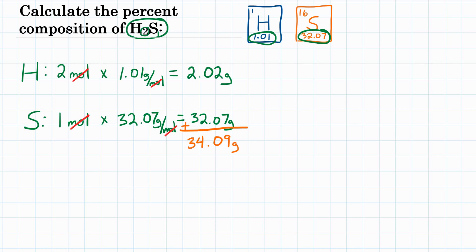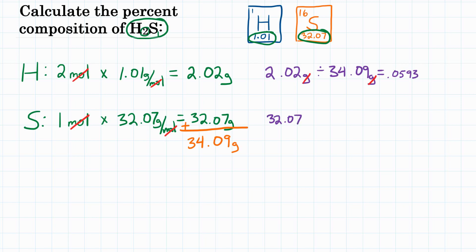Lastly, we want to take each of our masses and divide by that molar mass. For hydrogen, 2.02 grams divided by 34.09 grams gives us 0.0593 — grams cancel out, so no units. And for sulfur, 32.07 grams divided by 34.09 grams gives us 0.9407. Grams cancel out, no units.